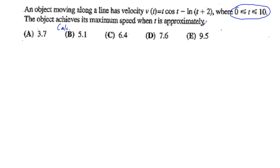The object achieves its maximum speed when t is approximately one of these five answer choices. So what you can do is graph this function and see where the maximum is. You have some function, when you graph it, it's going to have some maximum speed. So you're going to find what the maximum is and find where that is.